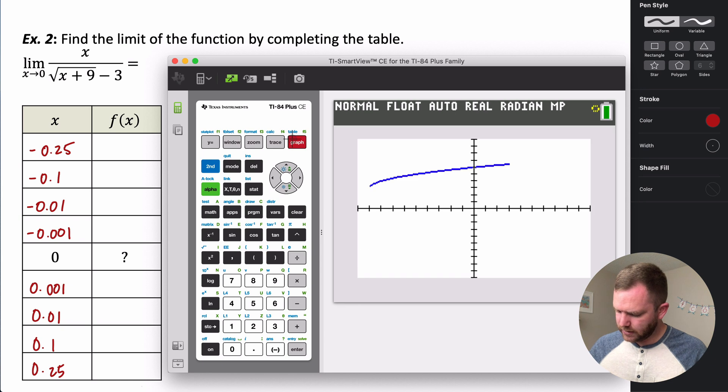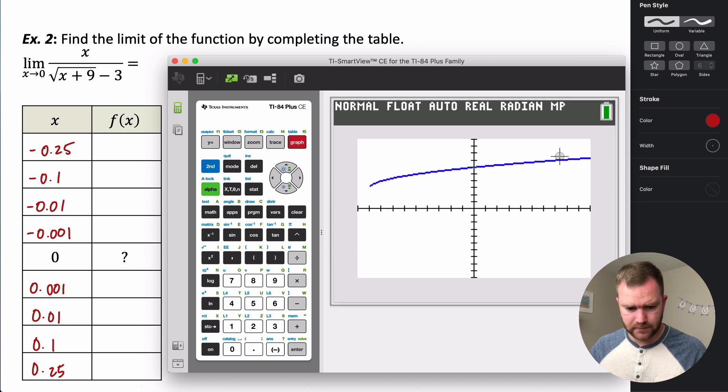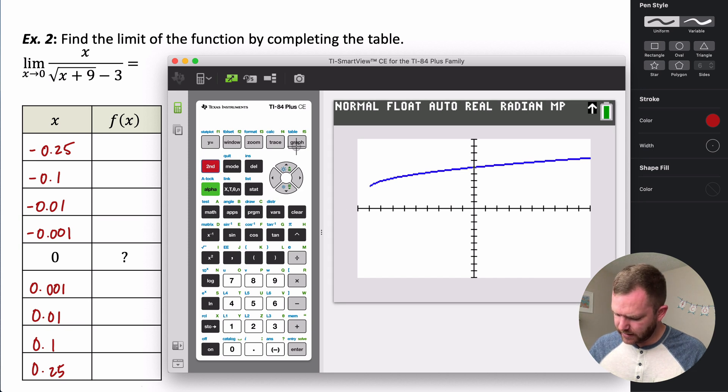And you could look at the graph. The graph will look something like this. Now, you can't really tell, but as x approaches zero, there's going to be a hole there. It's not going to be defined at zero. So let's go ahead and take a look at the table.